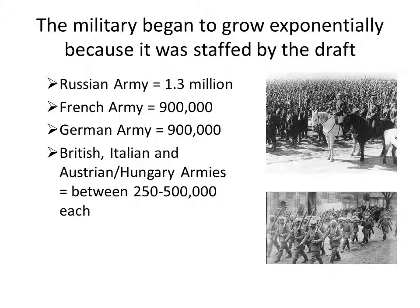Another issue is the military started to get bigger and bigger. All these different countries had drafts, and so you saw the military getting larger and larger. What happens when a bunch of men are trained how to fight and there's no actual war going on? They are itching for a fight. The Russian army had over a million people. The French and German armies had close to a million. The British, Italian, Austrian, and Hungarian armies had almost half a million each.